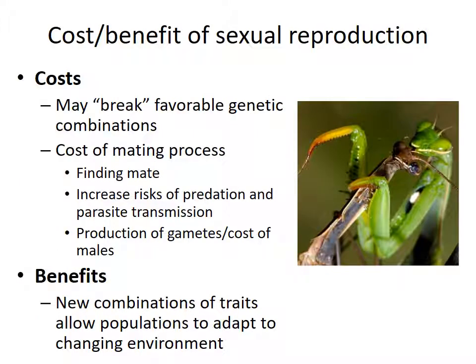There are costs and benefits to sexual reproduction. Costs include: it may break favorable genetic combinations — if a group of alleles were well-suited to a particular environment and you shuffle them, offspring might not have those alleles and might not survive. The mating process itself is costly — searching for a mate takes time and energy, increases risks of predation and parasite transmission, and producing gametes can be costly. Even just having males in a species can be costly. The benefit of sexual reproduction is that we get new combinations of traits that allow a population to adapt to a changing environment. If organisms have a good mix of traits suited to the current environment, those organisms are more likely to survive and reproduce.